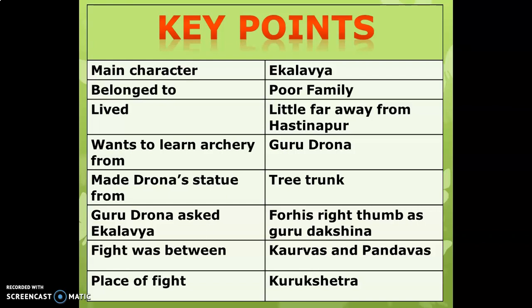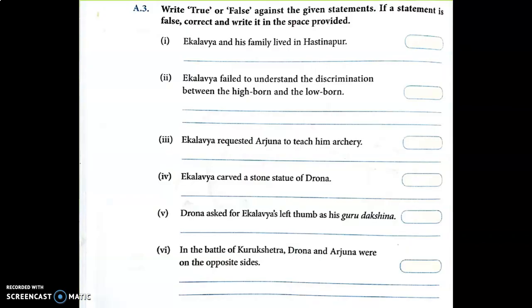Now that you've revised all these points, it will be very easy for you to do the back exercise. Let's start with Question A3: Write true or false against the given statements. If a statement is false, correct it and write it in the space provided. For true statements we will not change the sentence, and for false statements we will correct them.